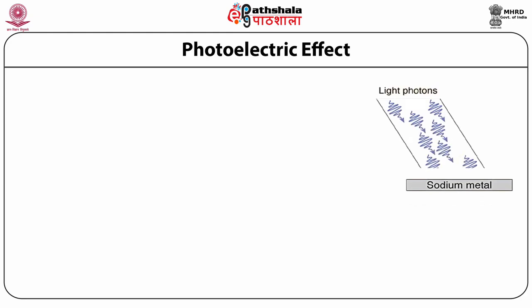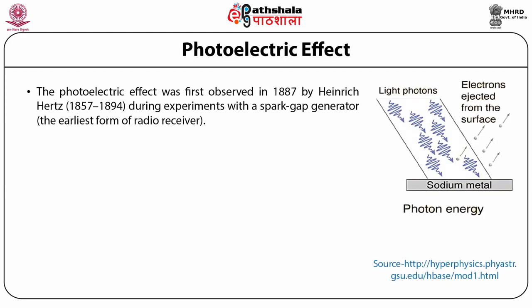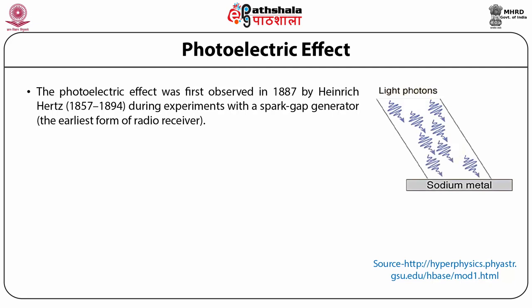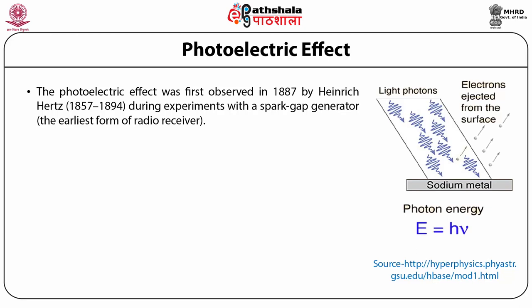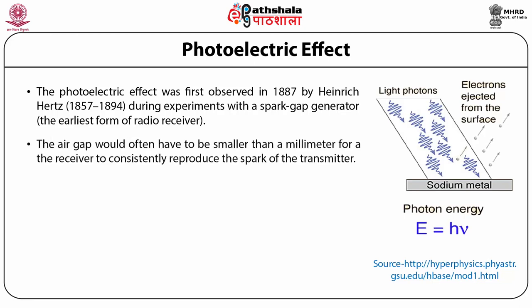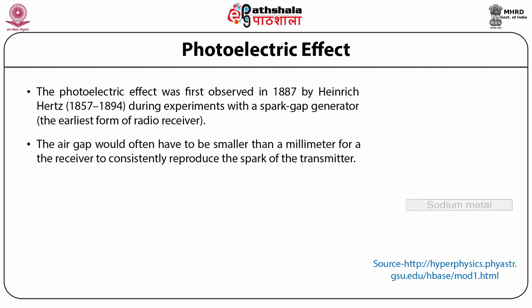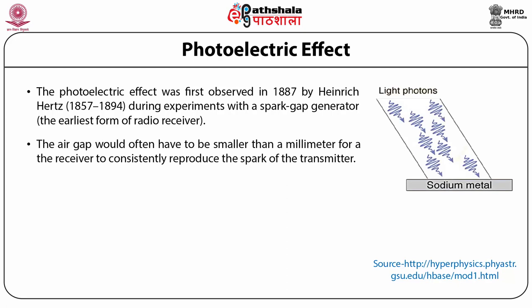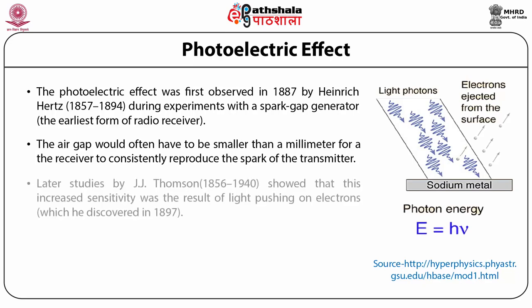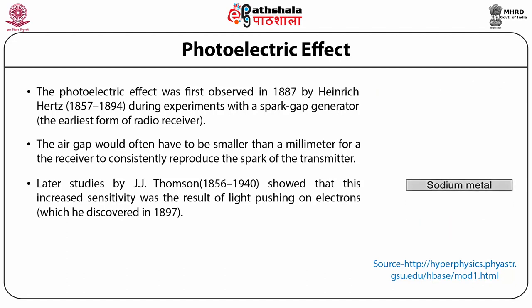The PES technique is based on the photoelectric effect, which was first observed in 1887 by Heinrich Hertz during experiments with a spark gap generator — the earliest form of radio receiver. In these experiments, a spark generated between two small metal spheres in a transmitter would introduce a similar spark in a receiver. Hertz found he could increase the sensitivity of his spark gap device by illuminating it with visible or ultraviolet light. Later studies by J.J. Thomson showed that this increased sensitivity was the result of light pushing on electrons.